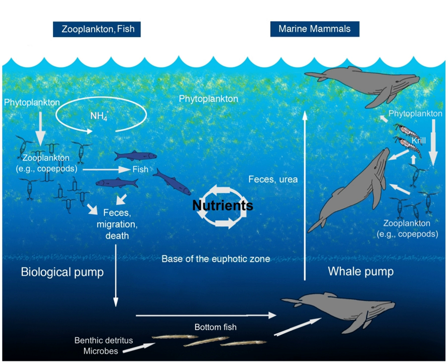Ecological systems have many biogeochemical cycles operating as a part of the system, for example the water cycle, the carbon cycle, the nitrogen cycle, etc. All chemical elements occurring in organisms are part of biogeochemical cycles.